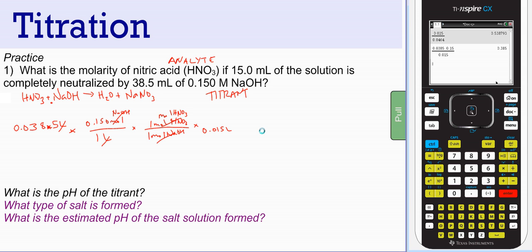And we end up finding that our concentration is 0.385 molar HNO3 nitric acid.